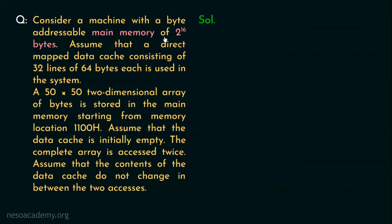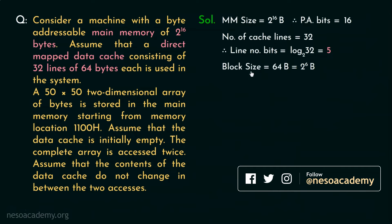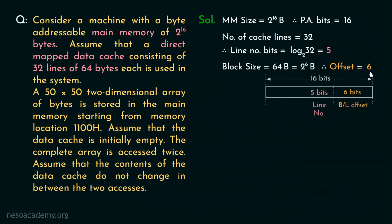The main memory size is 2^16 bytes, so the number of physical address (PA) bits is 16. The cache is direct-mapped with 32 lines, so line number bits = log₂(32) = 5 bits. The block size is 64 bytes = 2^6 bytes, so the offset is 6 bits. The tag bits = 16 − (5 + 6) = 5 bits. So the PA split is: 5 bits tag | 5 bits line number | 6 bits block offset.